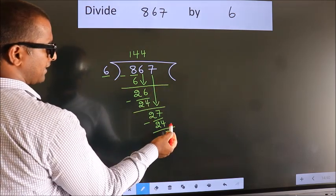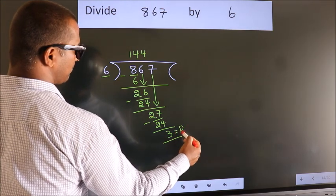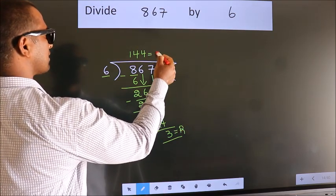No more numbers to bring it down. So we stop here. This is our remainder. This is our quotient.